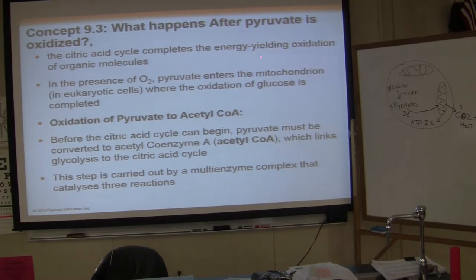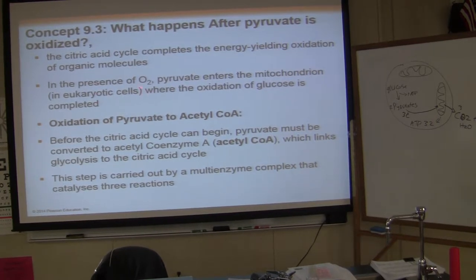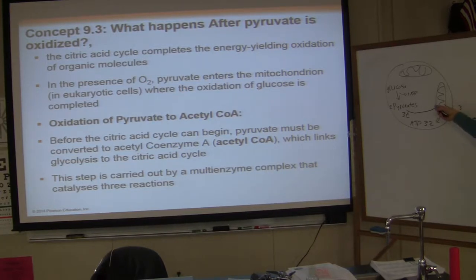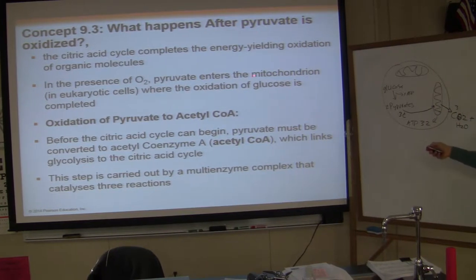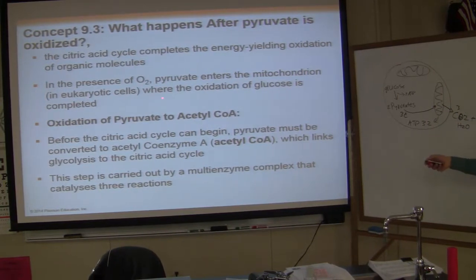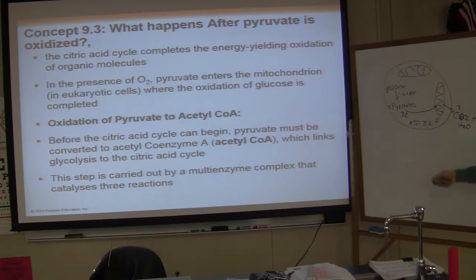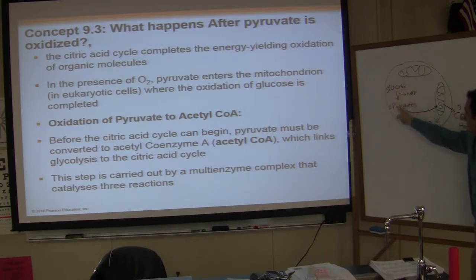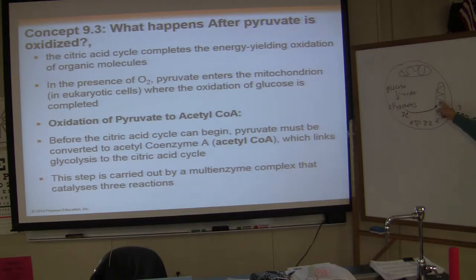The energy of the oxidation of organic molecules in the presence of oxygen requires mitochondria — mitochondria needs oxygen. In the presence of oxygen, pyruvate enters the mitochondrion in eukaryotic cells, so the oxidation of glucose is completed. The breakdown of glucose molecules is completed in mitochondria. You started out with glucose, it breaks down to pyruvate in the cytoplasm, and then pyruvate comes into mitochondria.